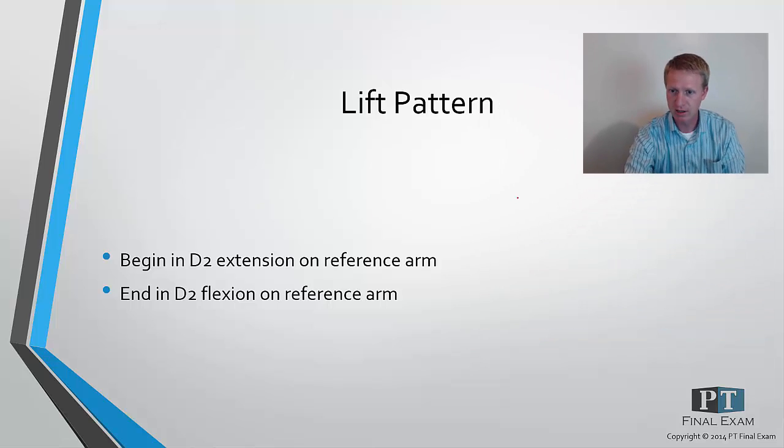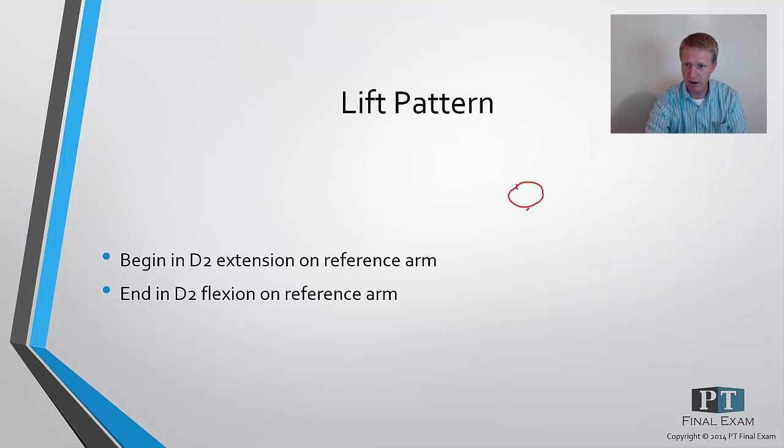So again, if we drew out the little guy, if the right arm is the reference arm that we're talking about, you're going to be starting up here. Well, no, I take that back. You're starting down here at the opposite hip and working up this direction in what's called the lift pattern. So the right arm is starting coming across like this, the left arm holding on tight, and coming up into D2 flexion. So that's what's called lift. And as you can imagine, if you come back from the top of the lift down to the bottom again, thus it would be called reverse lift.